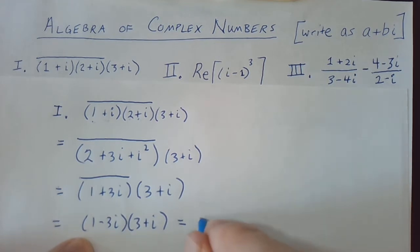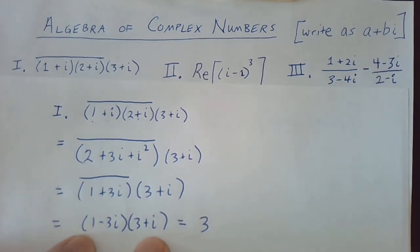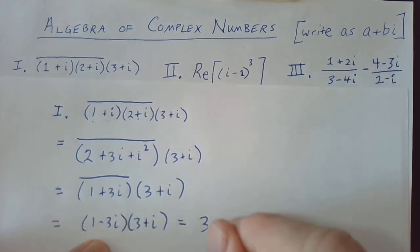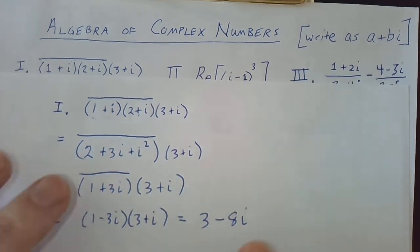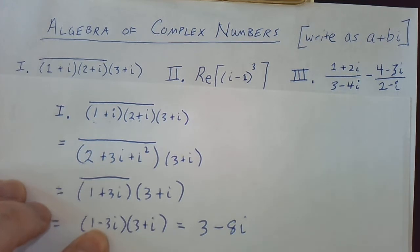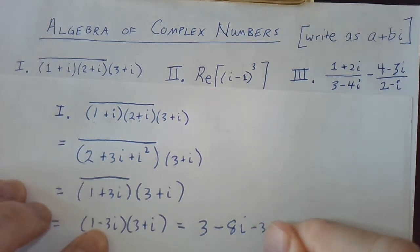The first would give me 3, the outer would be i, the inner would be negative 9i. So we have i minus 9i is minus 8i, and then the last is going to give us negative 3i squared.